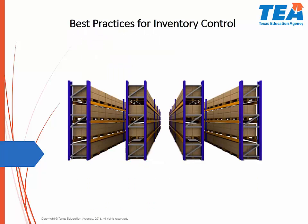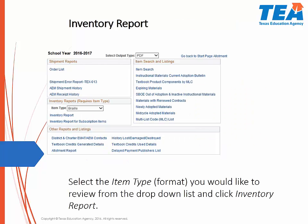Best Practices for Inventory Control: You may access the Reports page by going to Reports under AEM on the District Start page. You can select PDF or Excel format from the drop-down menu for Select Output Type at the top of the Reports page. You would then select item type or format that you would like to review from the drop-down list and click Inventory Report.